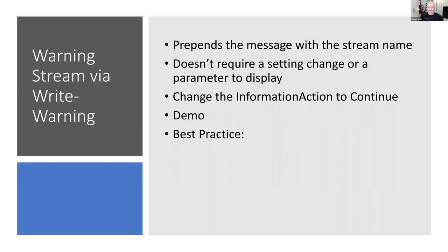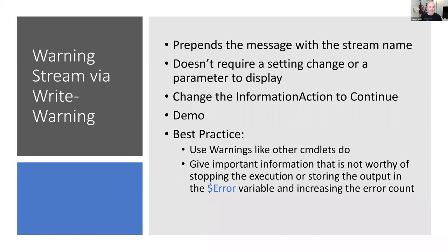Warning stream best practices: use warnings like other cmdlets do — give information that's not a crisis, not an error, but something the user needs to know because something bad could happen or something will change in the future. Give important information that's not worthy of stopping execution, and also something you don't want going into $Error because you may need that variable to be clean and you don't want to increase the error count.